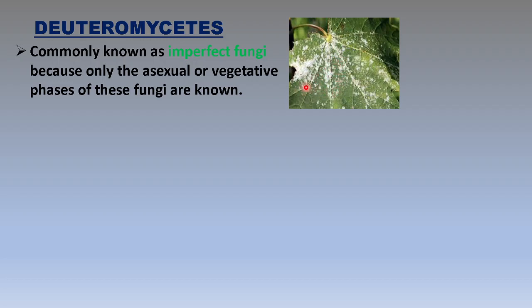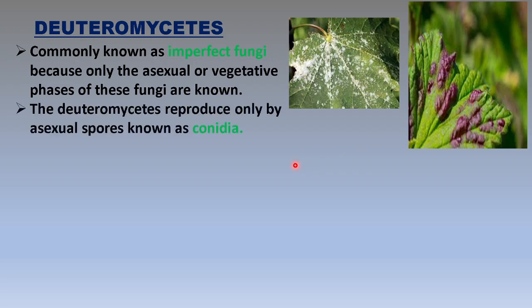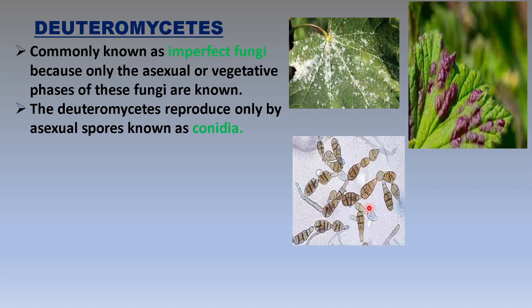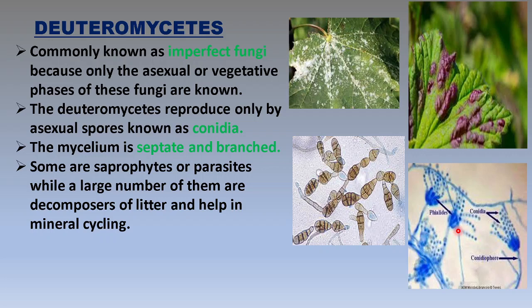A very common observation: in plants you will see spots or powdery masses on leaves — those are fungal infections due to members belonging to Deuteromycetes. They reproduce only by asexual spores called conidia. Under the microscope, this is how they appear — this example belongs to the species Alternaria. The mycelium is septate and branched, like Basidiomycetes.